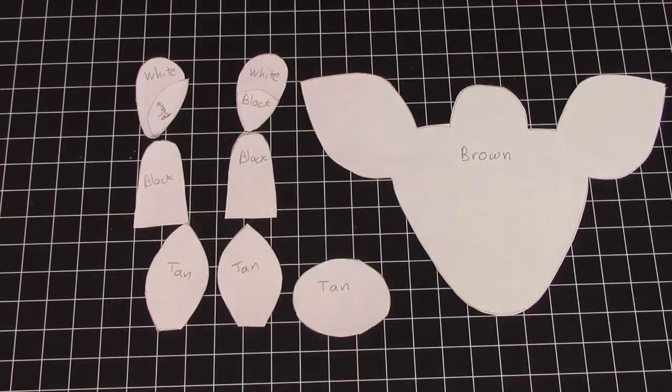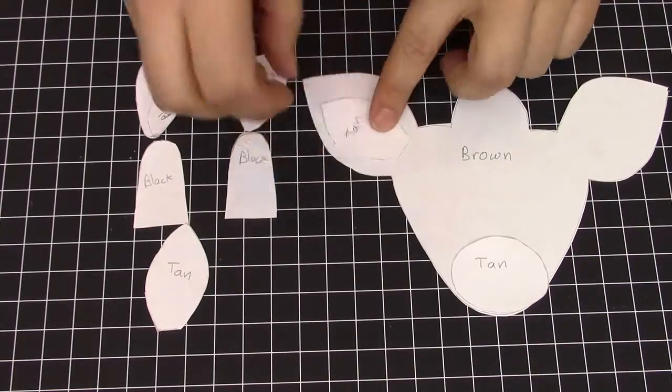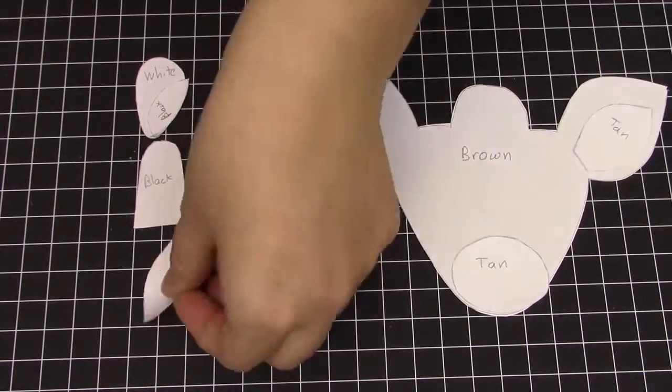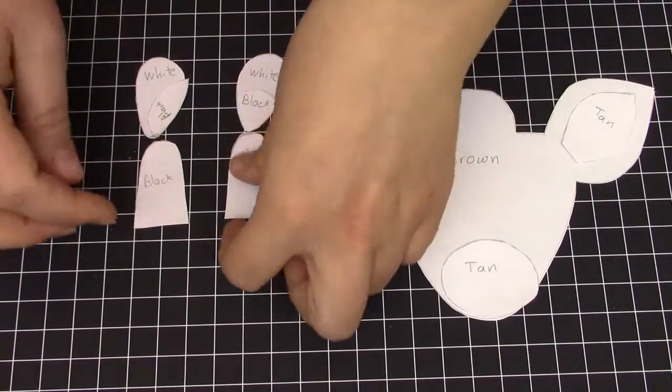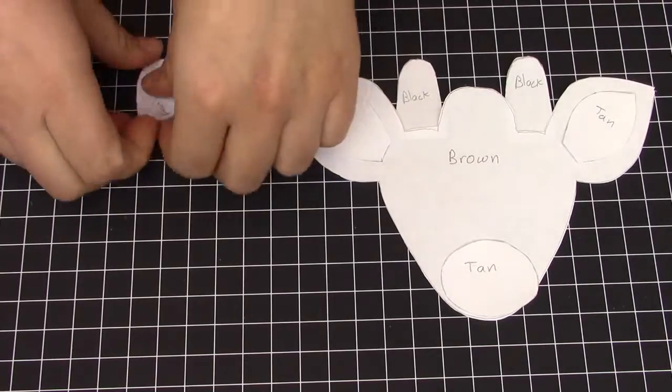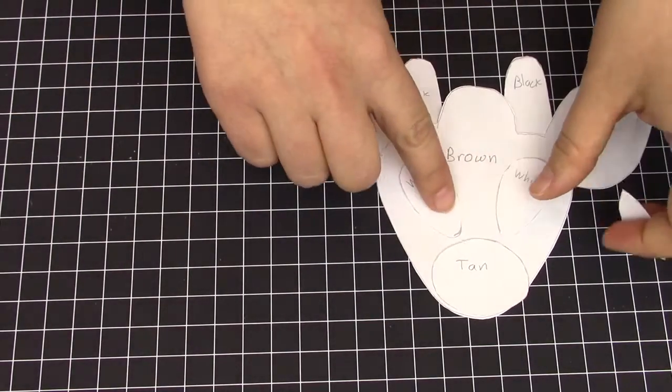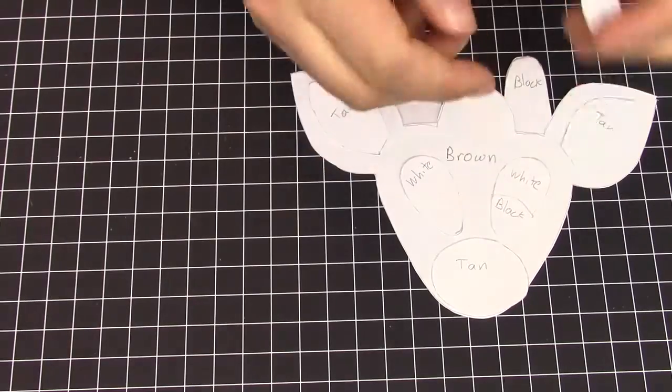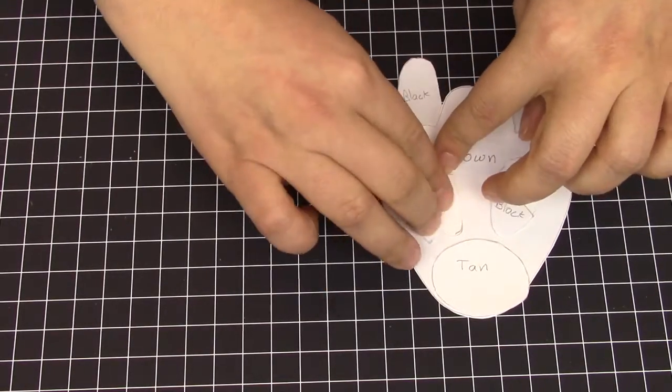We've made templates for all of the pieces to make it easier to assemble. The tan pieces will be the nose and the ears, the black antlers will go on top on the back, and then the white teardrops will be the eyes, and finally the small black pieces will be the pupils for the eyes.